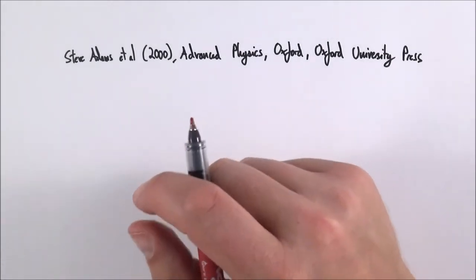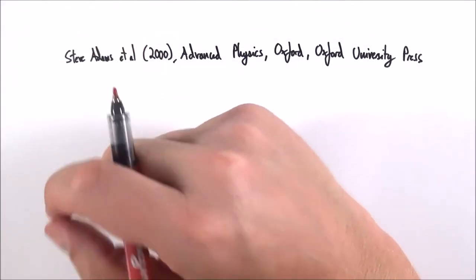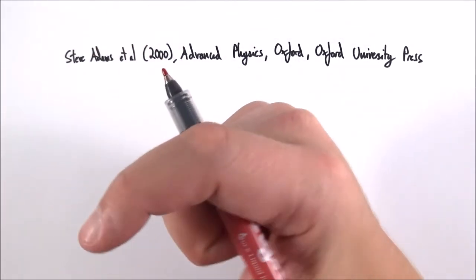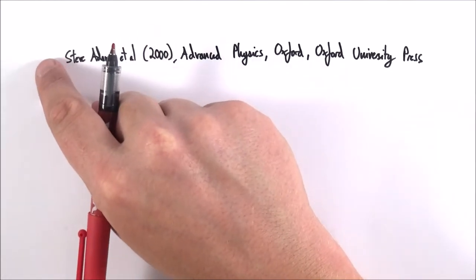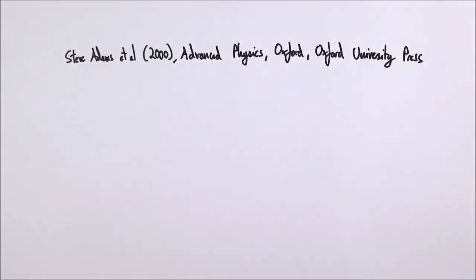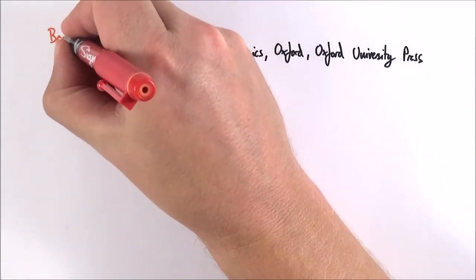if you're doing the Vancouver system, the numbered system, you just put them like one two three four five however they've been referenced in your text. If you're doing the Harvard system where you're using the name you just order all of the references in alphabetical order down the side. Now the important thing is if you have a book which is a really good source of information,